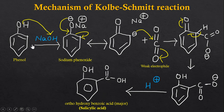First, this sodium hydroxide, which is a base, removes this acidic proton of phenol — here you can see the acidic nature of phenol — and we will get this sodium phenoxide, in which negative charge lies on the oxygen atom and there is a positive charge on sodium.